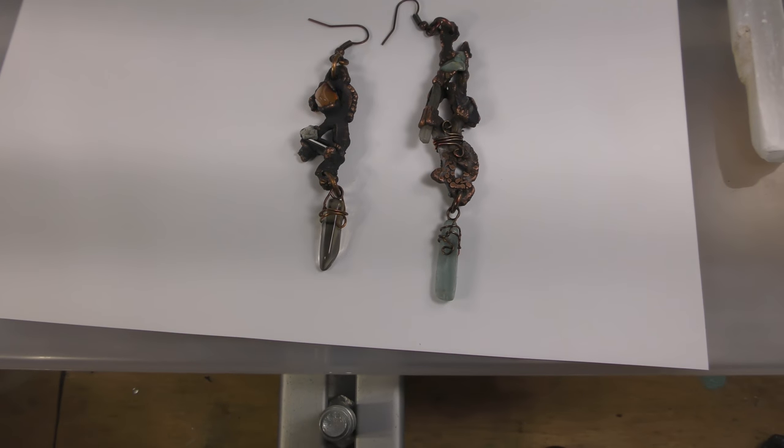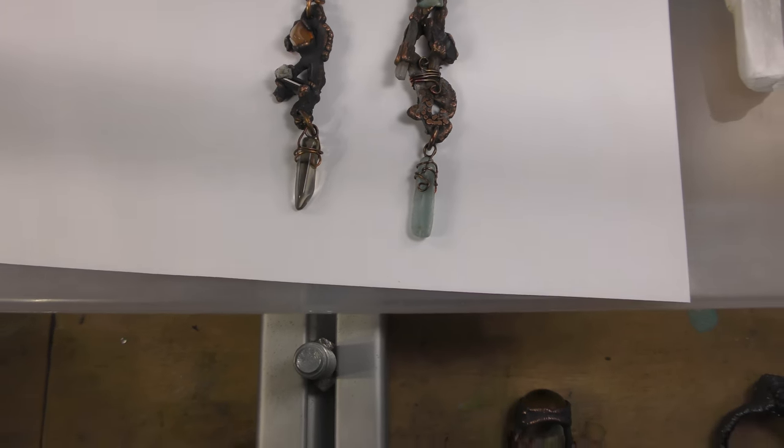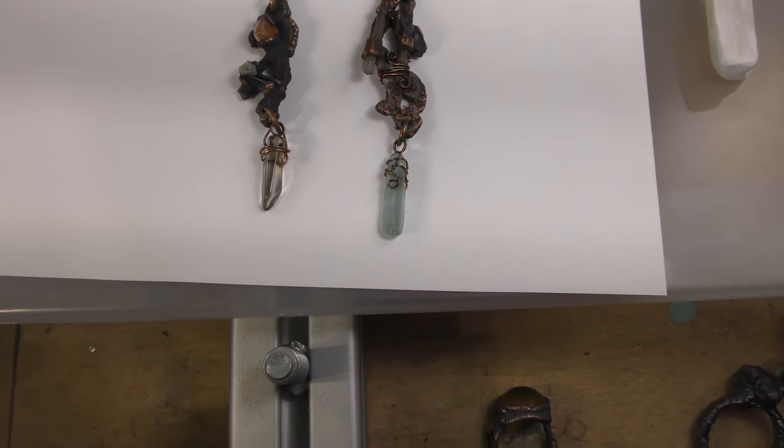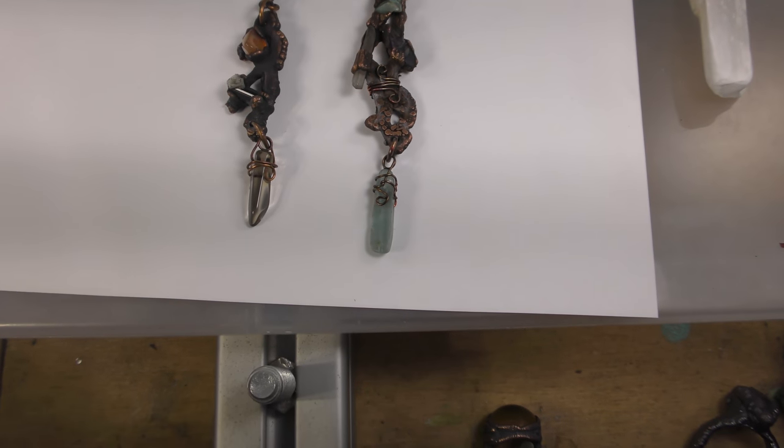Alright, so today I'm going to show you electro-etching. Electro-etching is the ability to cut shapes out of copper.